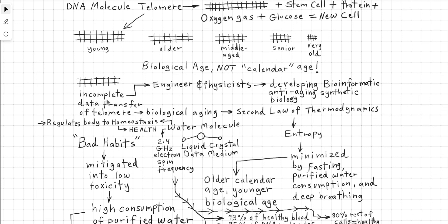Aging is based on the incomplete data transfer of telomere to the next batch of cells. This is biological aging. This is described by the second law of thermodynamics, which is entropy, energetic disorder and decay over the function of time. This entropy aging can be minimized by fasting, consuming purified water in large amounts and deep breathing, because then you charge more oxygen into the water jacket.